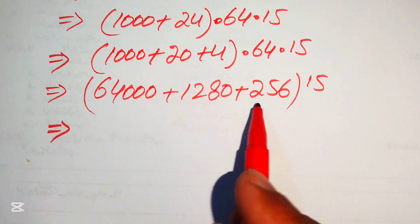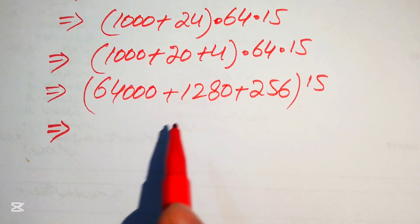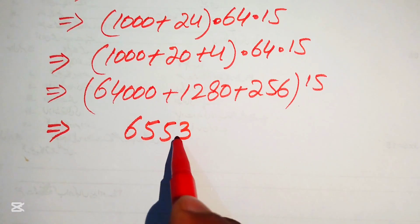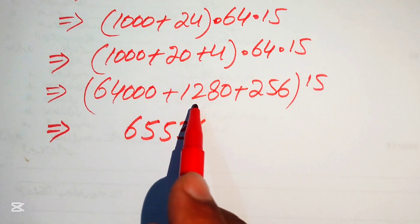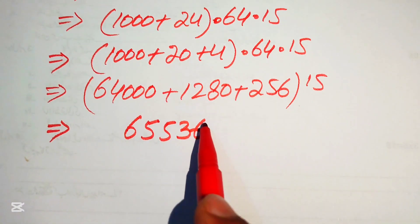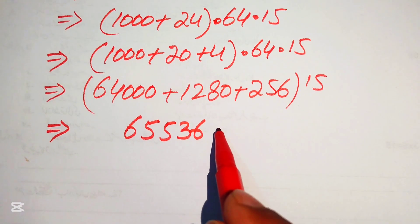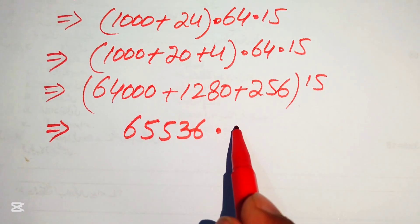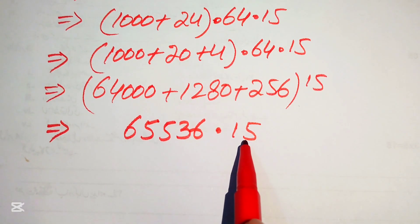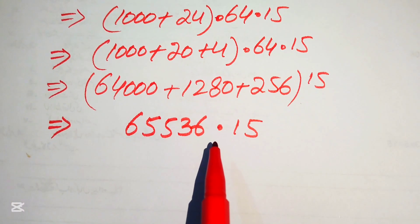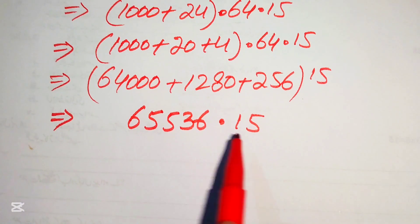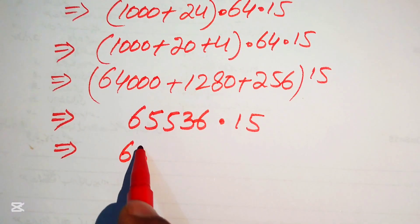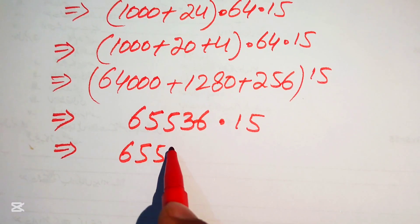Adding all the values: 64,000 plus 1,280 plus 256 equals 65,536. Now we need to multiply 65,536 by 15. To do this, we break 15 as 10 plus 5.